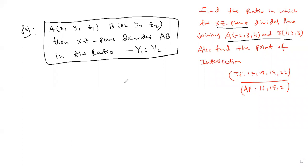For example, YZ plane divides AB in the ratio -X1 is to X2. YZ plane, so answer is X1 to X2 with negative sign.